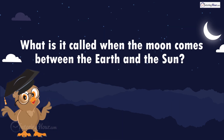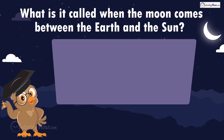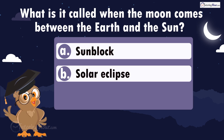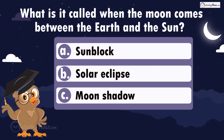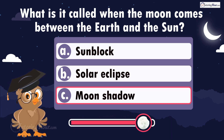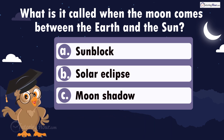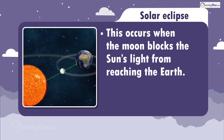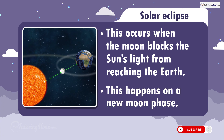What is it called when the moon comes between the Earth and the Sun? Is it A, sunblock; B, solar eclipse; or C, moon shadow? The correct answer is solar eclipse. This occurs when the moon blocks the Sun's light from reaching the Earth. This happens on a new moon phase.